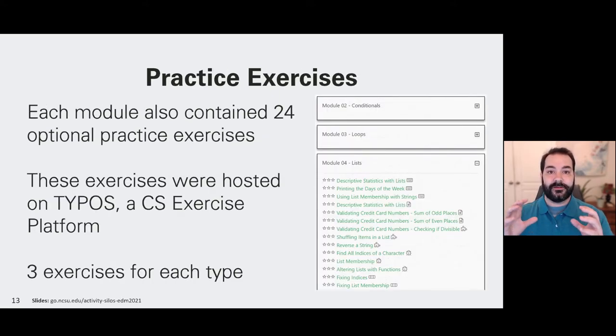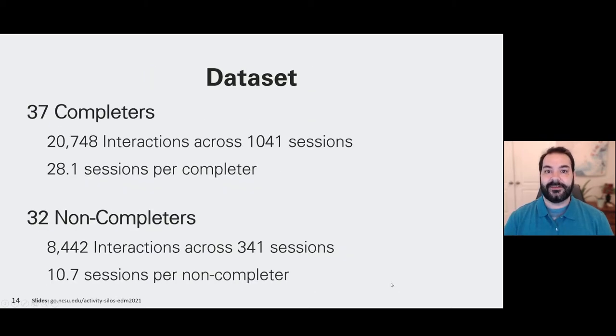In addition, we used another platform known as Typos. Typos hosted 24 optional practice exercises of those exercise types for each module. For example, in the image, we can see that there are three typing exercises for lists, three fill-in-the-blank exercises for lists, three Parsons puzzles. So our data set in total is that we had 37 completers and 32 non-completers.